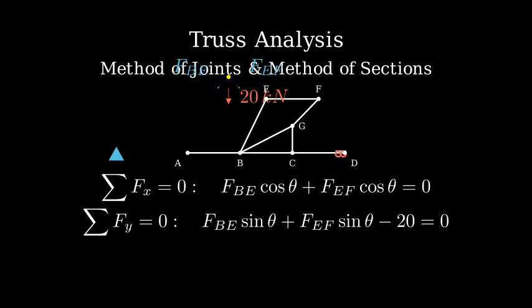Now, let's use the method of sections to find the force in member CB. We'll make an imaginary cut through members CB, CG, and BG. Taking moments about point G, we can find the force in member CB.